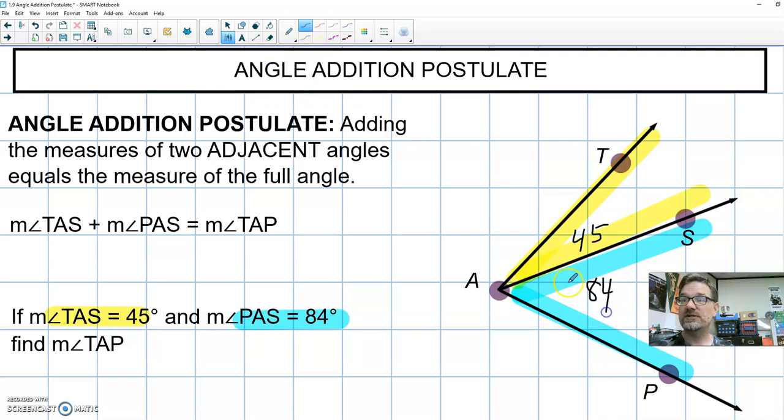Let's find the measure of angle TAP. Angle TAP. TAP. That angle on the outside. What does the rule say? Our rule says inside plus inside equals whole thing.